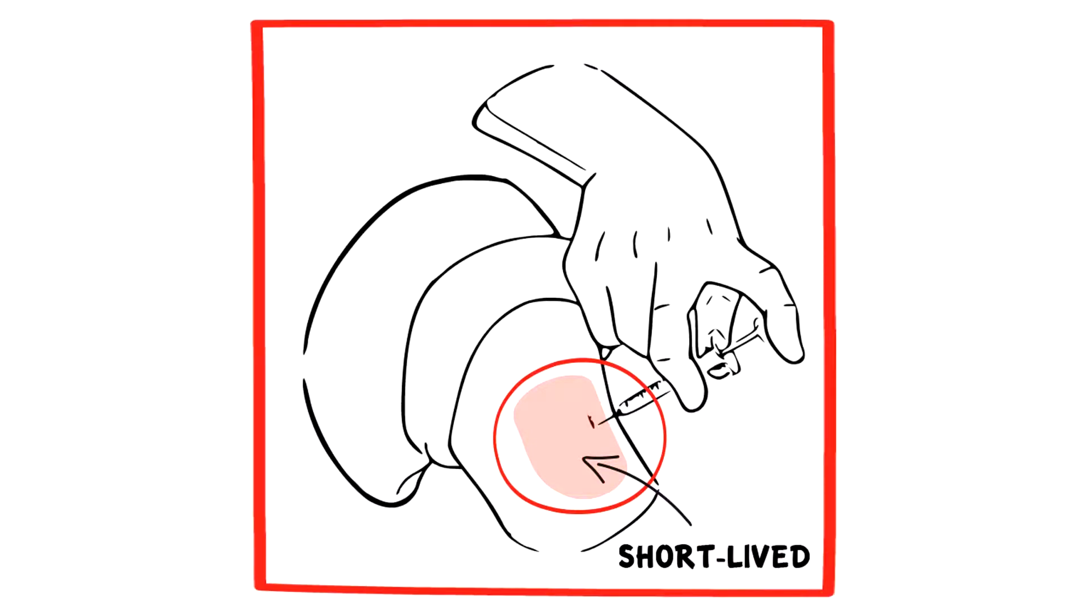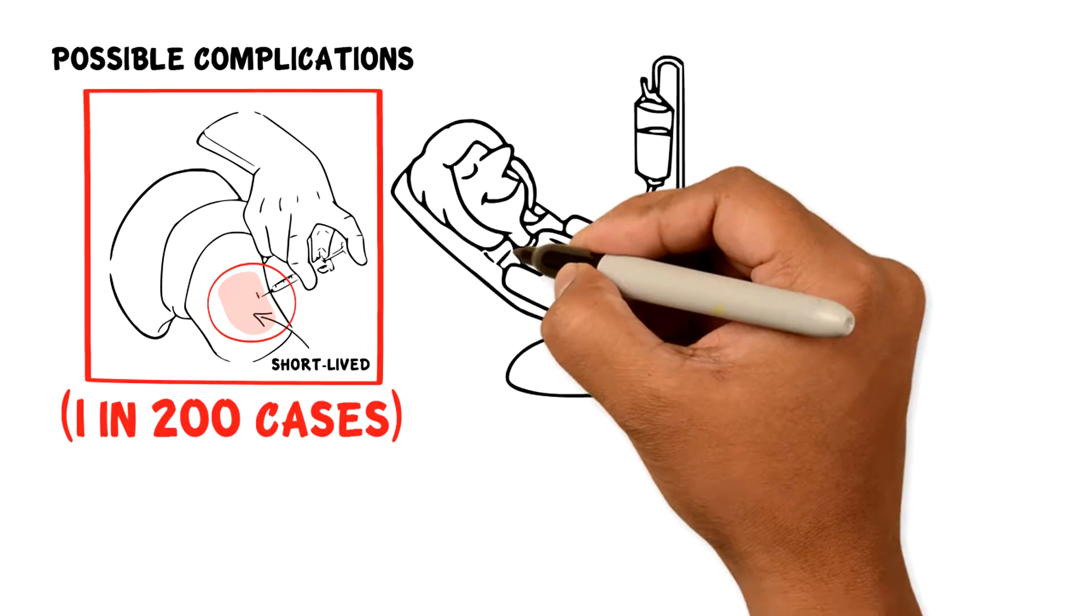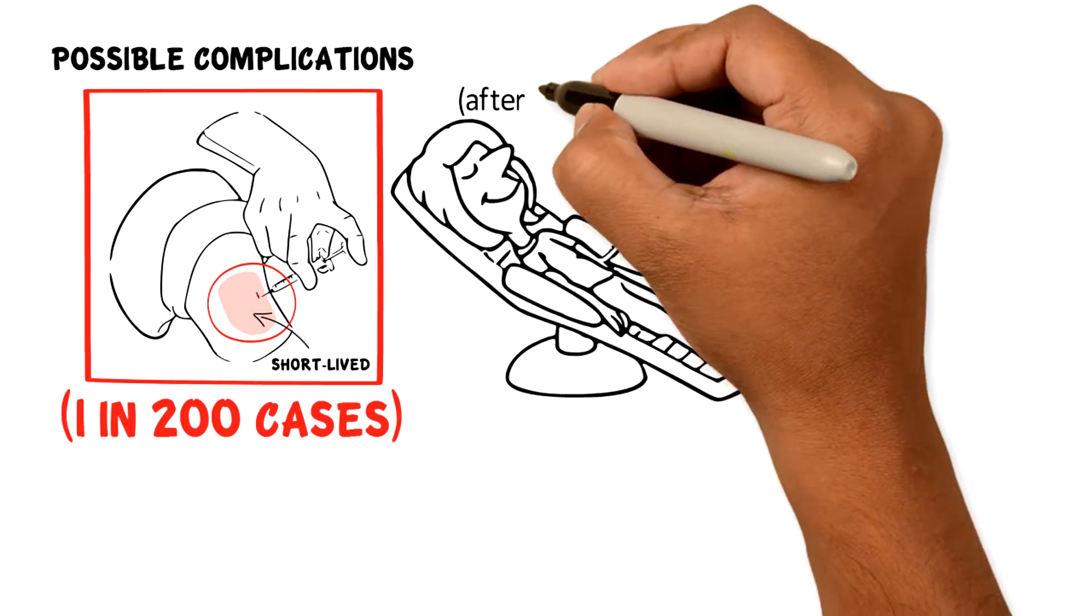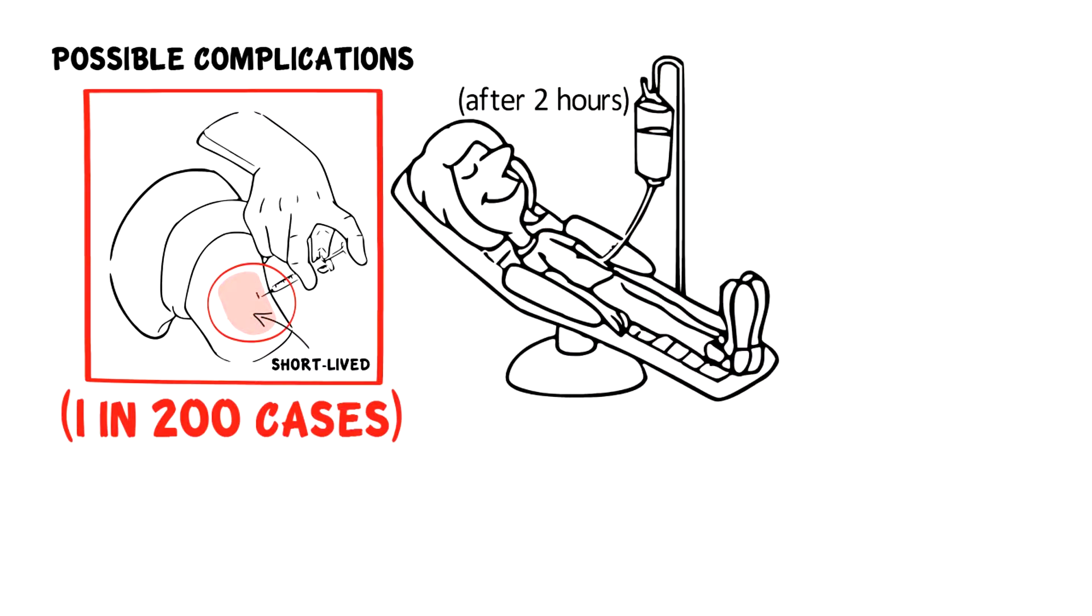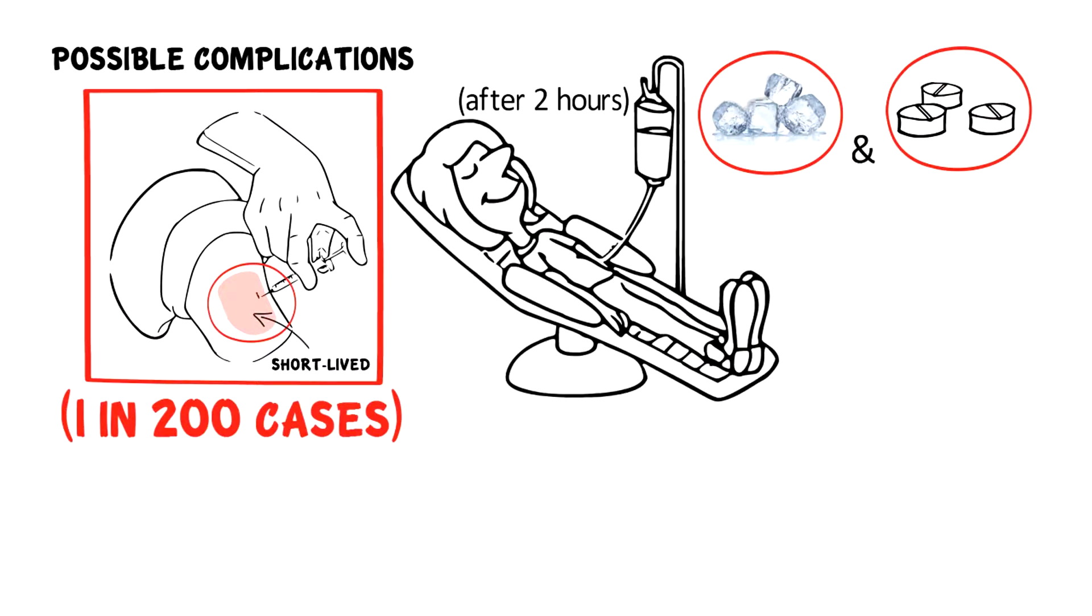Post-injection flare may happen due to a reaction to the joint injection. This is unusual. It happens in 1 in 200 cases, but occurs when the anesthetic wears off after 2 hours. If this happens to you, apply some ice and take some paracetamol. It is a self-limiting condition and will usually settle within 48 hours.